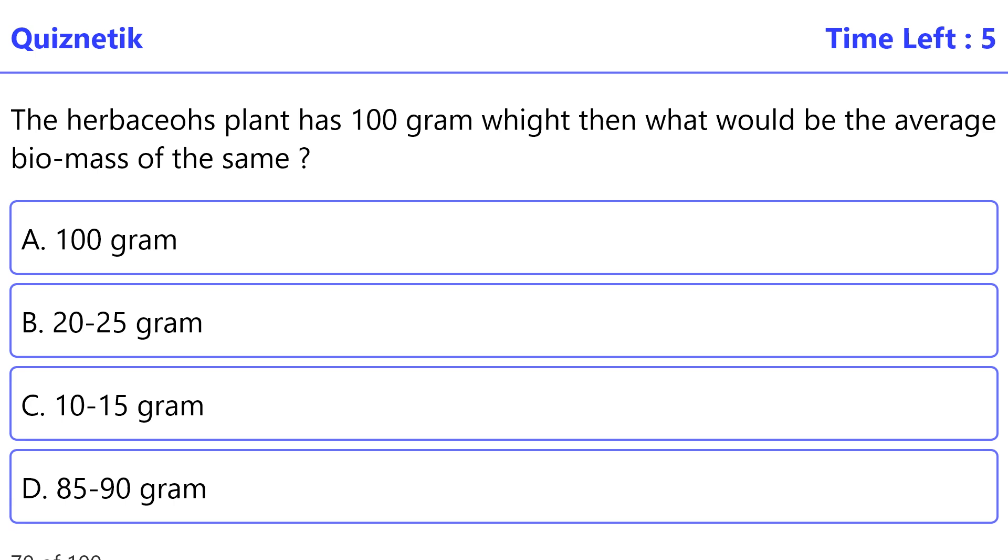The herbaceous plant has 100 g weight, then what would be the average biomass of the same? The correct option is C, 10-15 g.